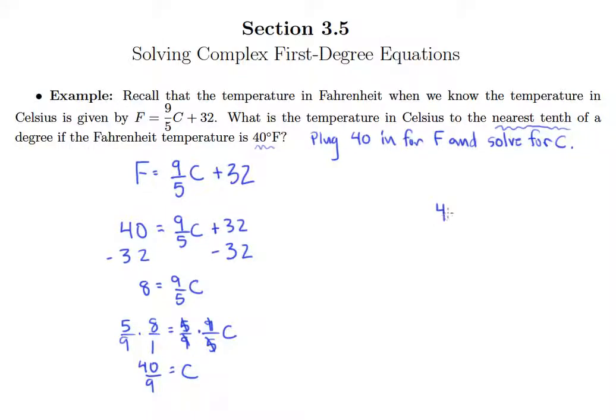So we have 40 divided by 9. And 9 goes into 40 four times. 36, remainder of 4, drop down to 0. So we'll have a decimal point there. 9 goes into 40, again, 4 times.